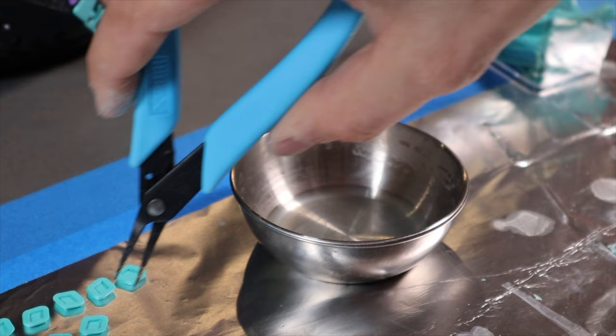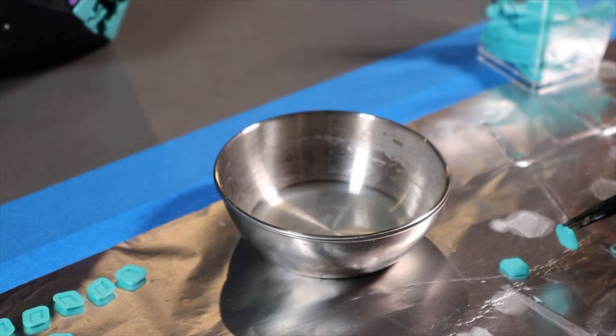ABS is special because its surface melts when exposed to acetone. After the acetone evaporates, we're left with a mirror-like, shiny surface.